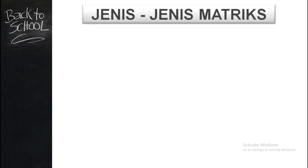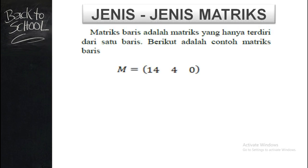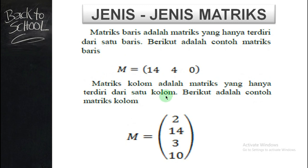Setelah belajar tentang entry dan ordo matriks, kita belajar tentang jenis-jenis matriks. Matriks yang pertama adalah matriks baris. Yang dimaksud matriks baris adalah matriks yang terdiri dari 1 baris saja. Ini hanya 1 baris: baris pertama 14, 4, 0. Jadi 1 baris, kolomnya terserah — boleh 2, boleh 3, 4. Kalau ada matriks baris, temannya adalah matriks kolom. Matriks kolom adalah matriks yang hanya terdiri dari 1 kolom saja. Kalau ditanya tentang ordo matriksnya: yang atas tadi 1 baris, ada 3 kolom, jadi 1 kali 3. Kalau yang bawah, barisnya 4, kolomnya 1, jadi 4 kali 1.